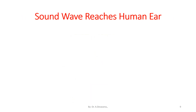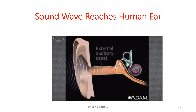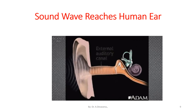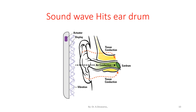Let us see how the sound wave reaches the human ear. A sound wave is generated outside and reaches the human ear. That sound wave passes through the external auditory canal and hits the eardrum present inside the human ear. From the eardrum, it passes to the inner ear. This is how the sound wave hits the eardrum.